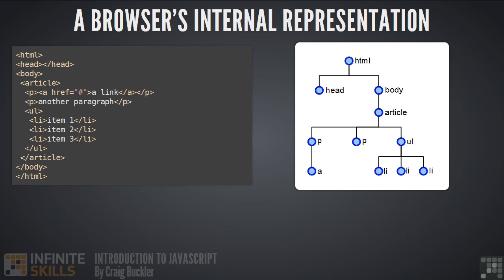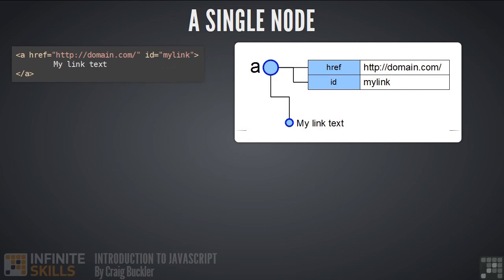Now let's look at a single node in a little more detail. Here we have an anchor link which has a couple of attributes and some text. The attributes themselves can be accessed directly from the anchor node—they're properties of our A node. The text belonging to our anchor link is a separate child node.